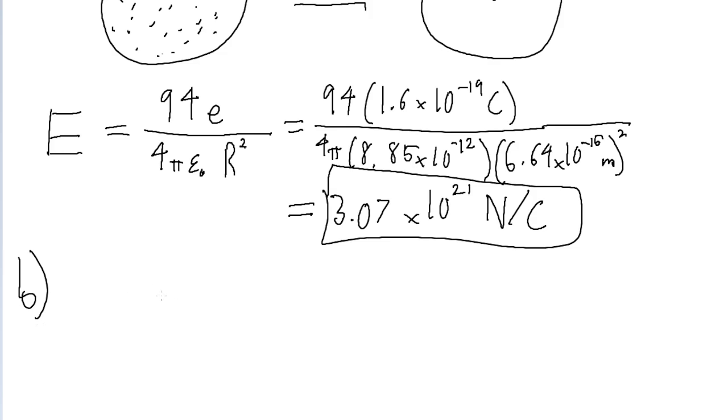By convention, electric field lines point away from positive charges and toward negative charges. In this case, we're looking at a nucleus made up of 94 protons, so it is positively charged.